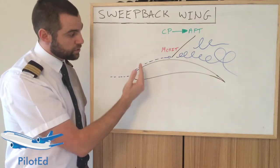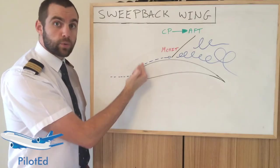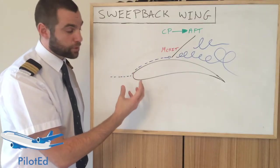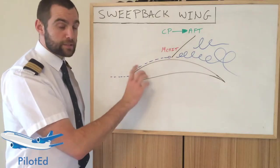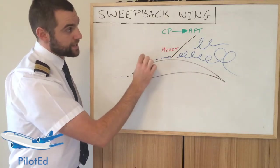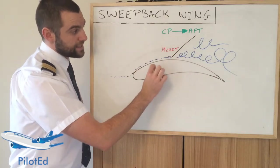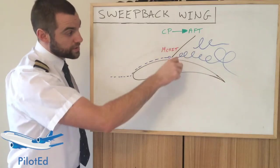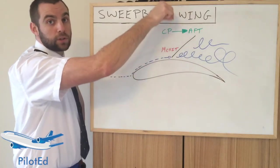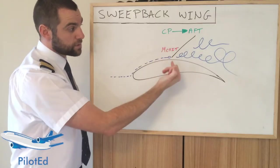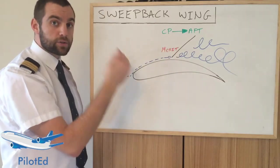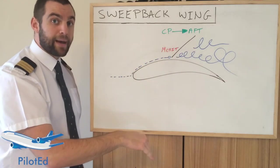The center of pressure normally is going to be somewhere around 25%. As the aerofoil reaches Mcrit and hits supersonic speeds, everything essentially moves back, so that center of pressure point is now further backwards. That causes the wing to be pulled from further aft, and it can move as far back as 50% of the chord line.